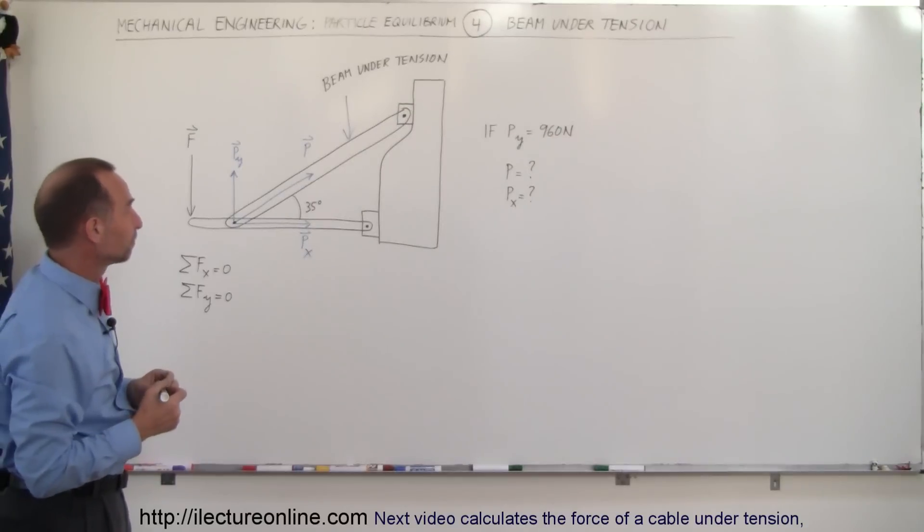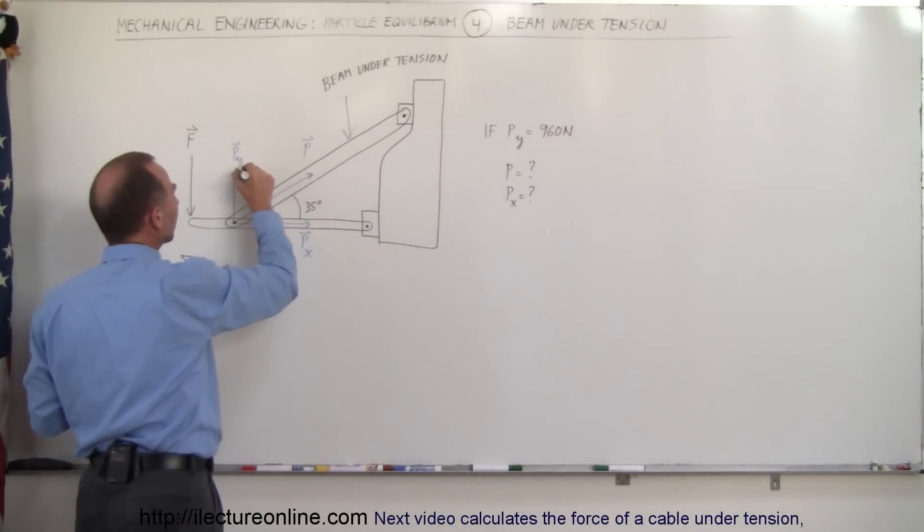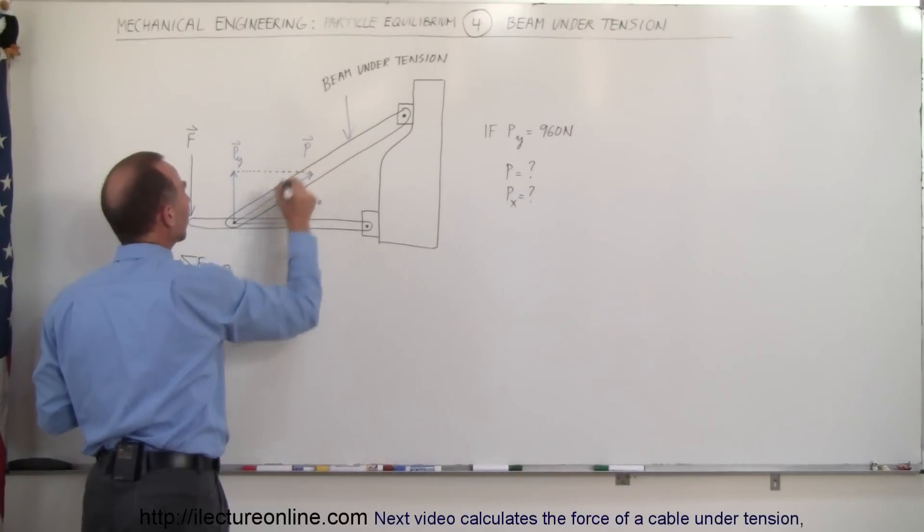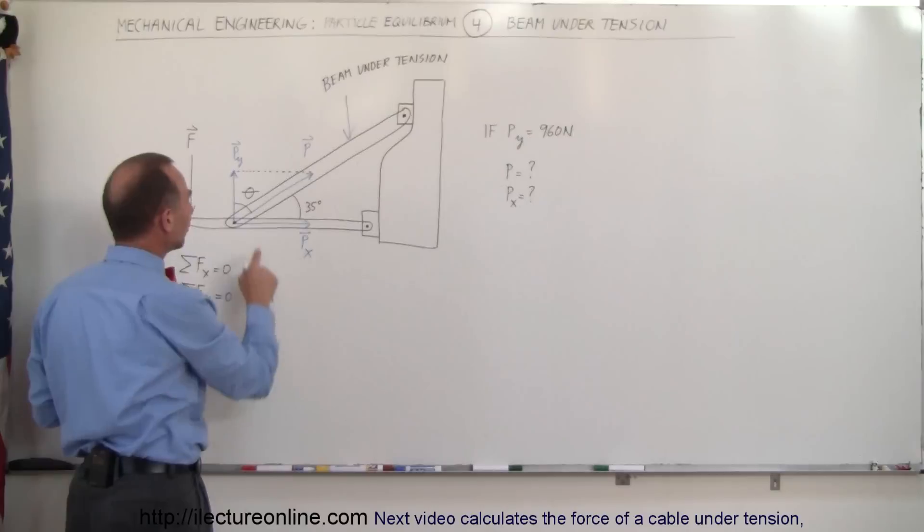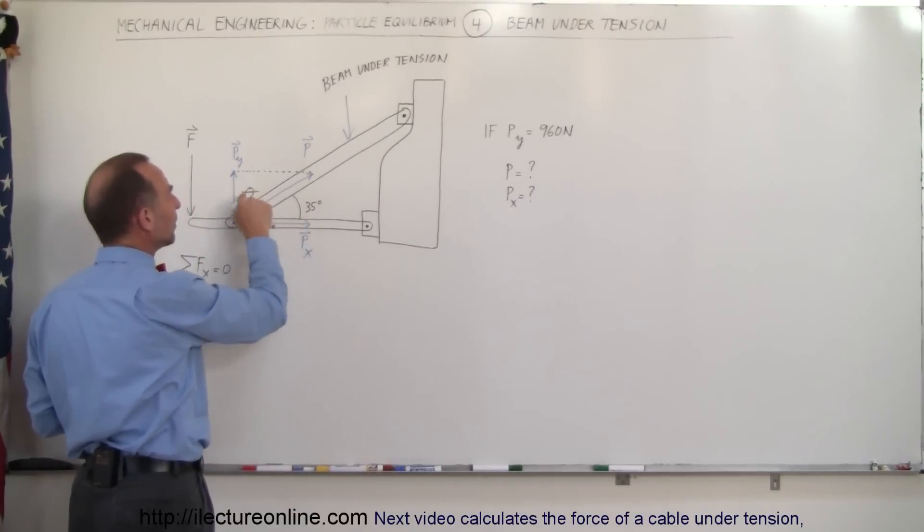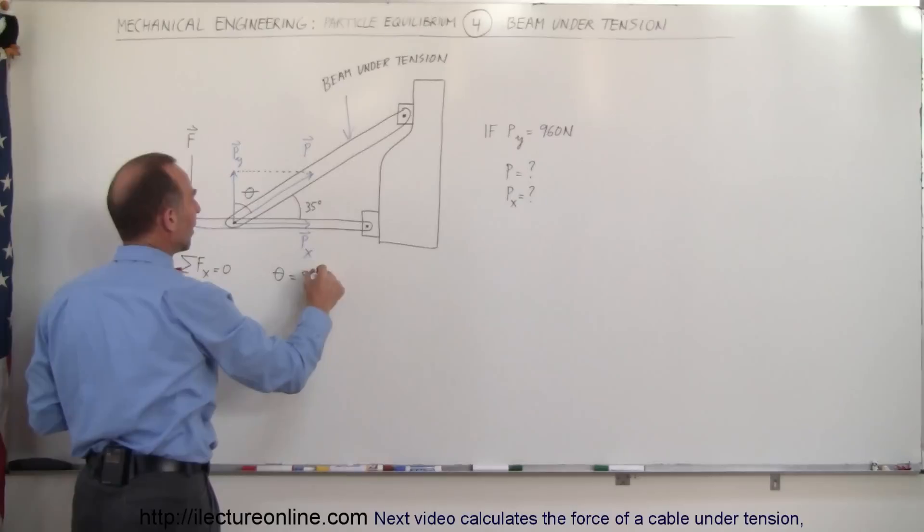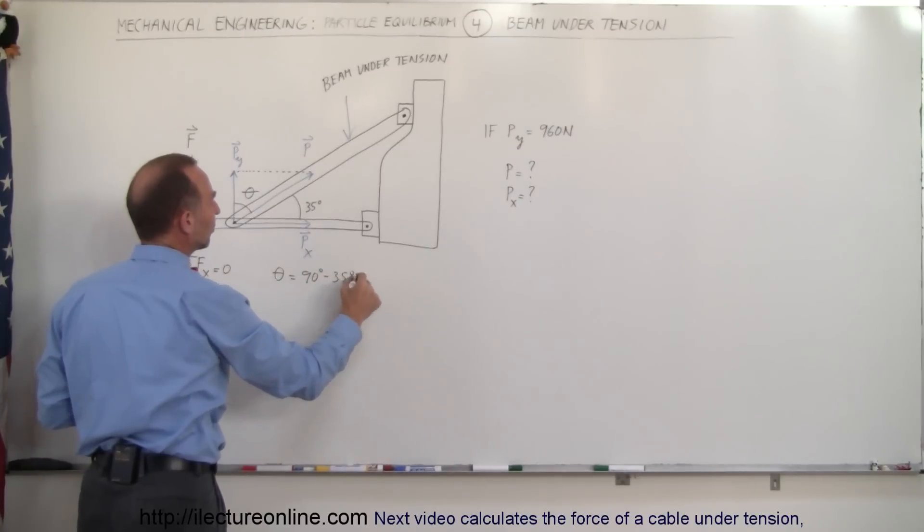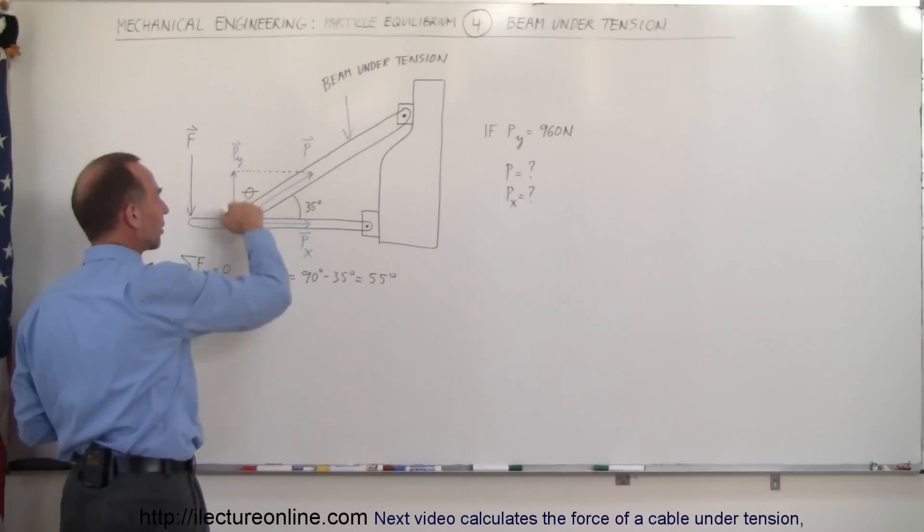Notice we can turn this into a triangle by completing this line right there, and that means we can find out what this angle is equal to. We know that theta plus 35 degrees must equal 90 degrees, so therefore theta is equal to 90 degrees minus 35 degrees, which is equal to 55 degrees.